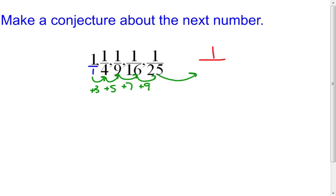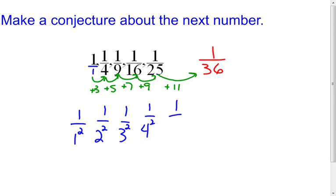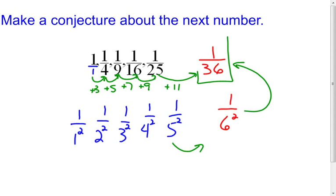My conjecture — my educated guess — tells me the denominators must go up by eleven next, which gives me 36. Another way to look at this is as one over one squared, one over two squared, one over three squared, one over four squared, one over five squared. So my conjecture going to the next one is that the numerator will be one and the denominator will be six squared. Six squared is 36, so the next number is one over 36.